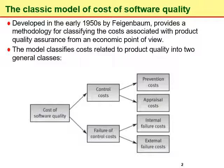Cost of control includes costs that are spent to prevent and detect errors in order to reduce them to an acceptable level. Cost of failure of control includes costs of failures that occurred because of a failure to prevent and detect software errors. We will discuss each of these costs in detail in the upcoming slides.